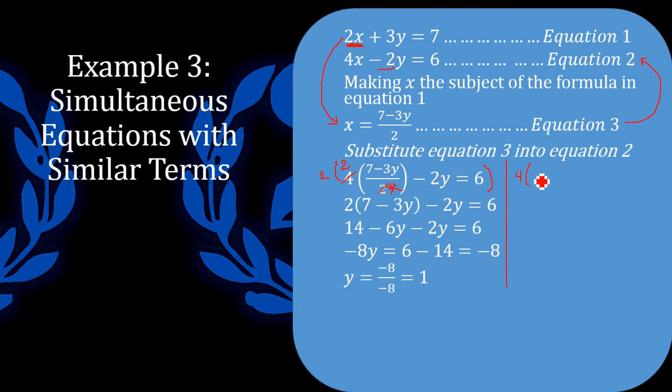I would end up with 4 into 7 minus 3y because my 2 on the underneath would cancel with the 2 I multiply by. And then this minus 2y here would also be multiplied by a value of 2. And then this 6 here would also be multiplied by a value of 2.